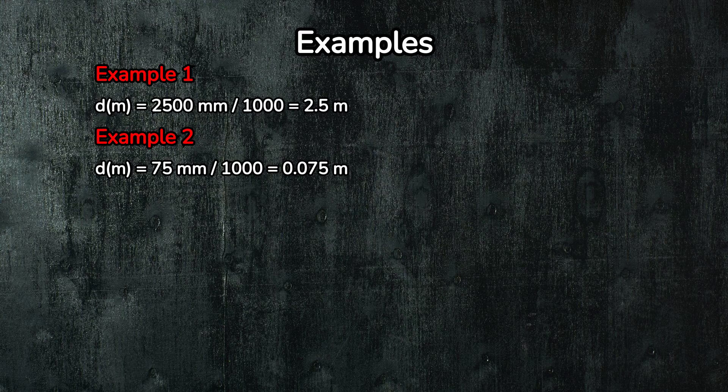Let's see this formula in action with a couple of examples. Example one, convert two thousand five hundred millimeters to meters. Using our formula, we take two thousand five hundred and divide by one thousand. So, two thousand five hundred millimeters is equal to two point five meters.